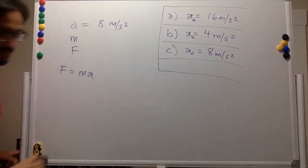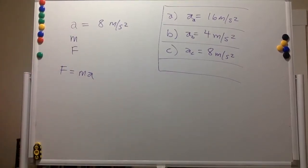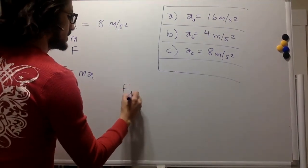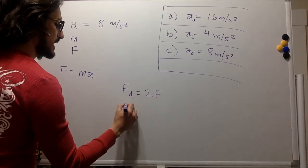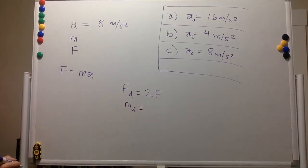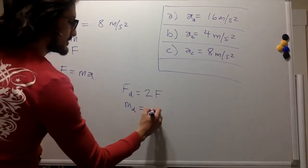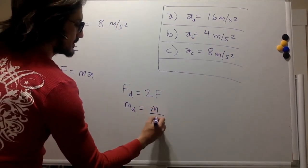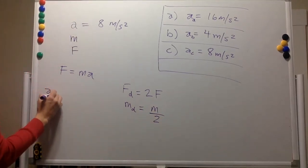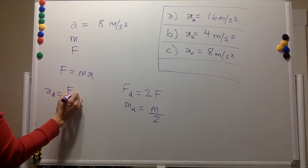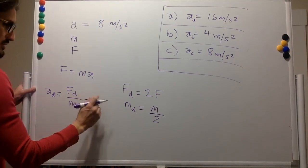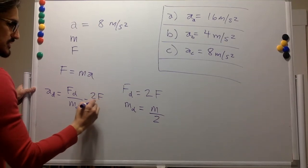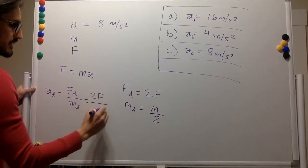Finally, for part D, the force is doubled and the object's mass is halved. The force of D is 2 times the original force, and the mass of part D is half the original mass. So the acceleration of D is the force of D divided by the mass of part D.